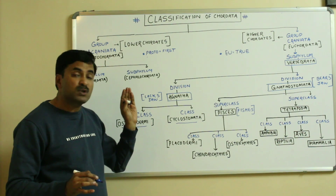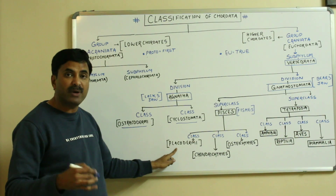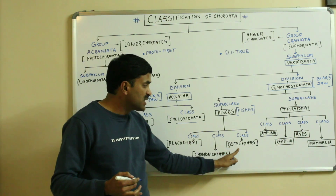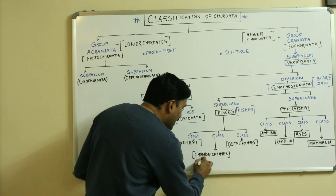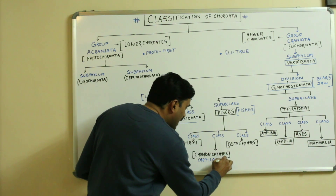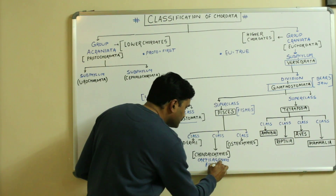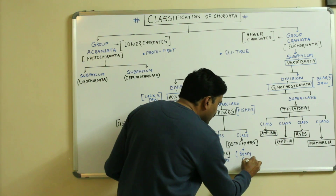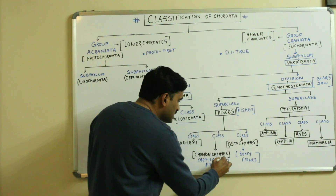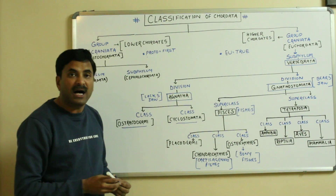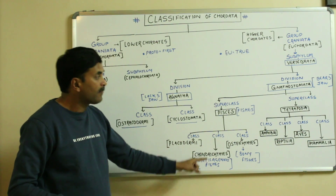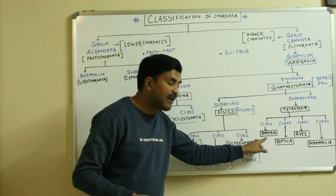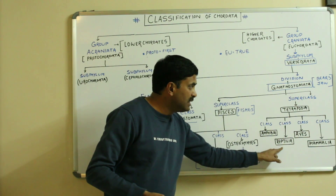The superclass Pisces is divided into three classes. The most primitive class is Placodermi, and the two advanced classes are Chondrichthyes and Osteichthyes. Chondrichthyes means they are cartilaginous fishes, and Osteichthyes means they are bony fishes. All bony fishes are included in the class Osteichthyes, and all cartilaginous fishes are included in the class Chondrichthyes.